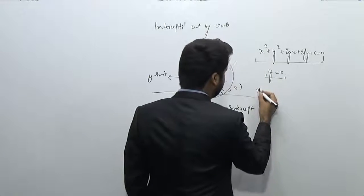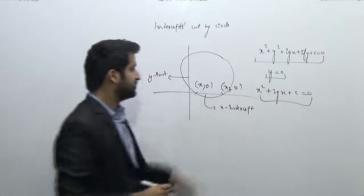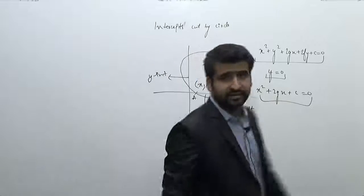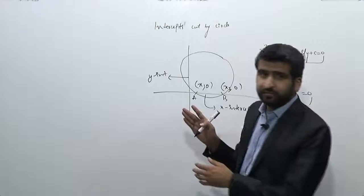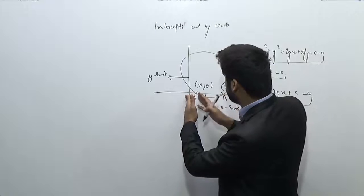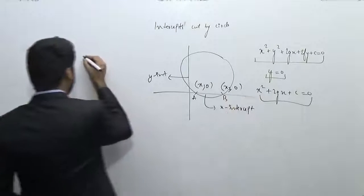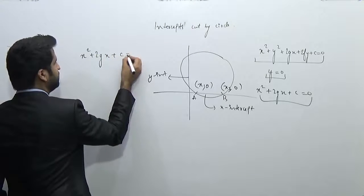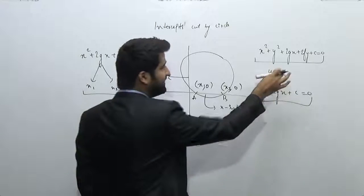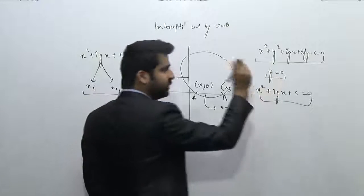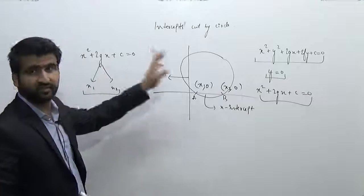So if I put the value of y = 0, this equation will become x² + 2gx + c = 0. Let's say this is (x₂, 0) and this one is (x₁, 0) — these are the two points where the circle is intersecting the x-axis. The x-intercept is the difference between these two values. I know that the two roots of this equation x² + 2gx + c = 0 are x₁ and x₂, because substituting y = 0 into the circle gives us points A and B, and their x-coordinates are the roots of this equation.